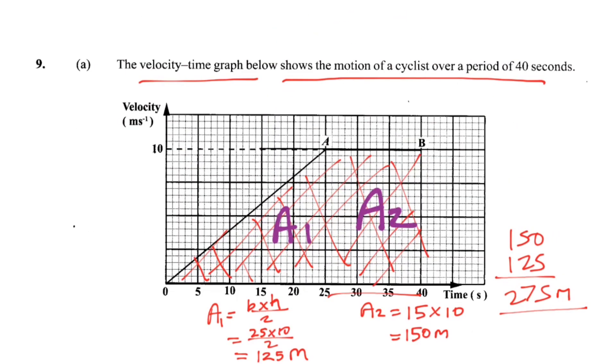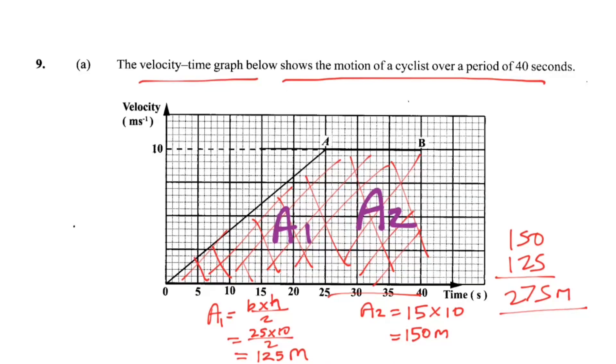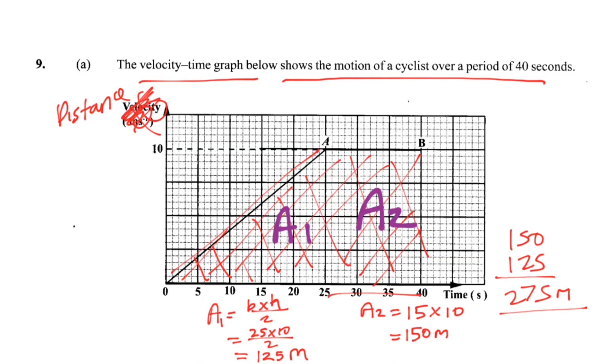What's the takeaway from that question? On a velocity-time graph, the gradient means acceleration, and the area under the graph means distance. If it was a distance-time graph instead — with distance on the vertical axis — then the gradient represents velocity, and you don't really need the area. The velocity-time graph is the one where you can get a more detailed question, so that one usually comes up. But if the distance-time graph comes tomorrow, you know what to do.